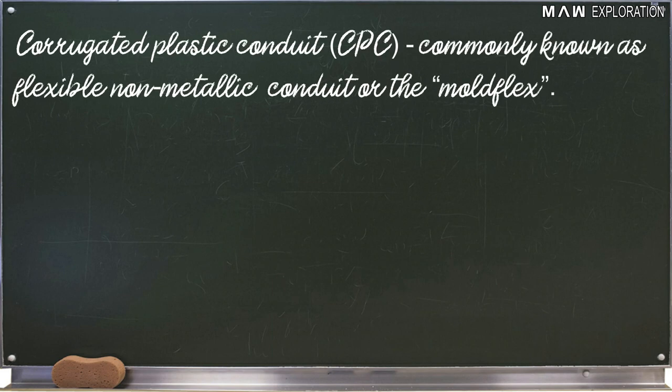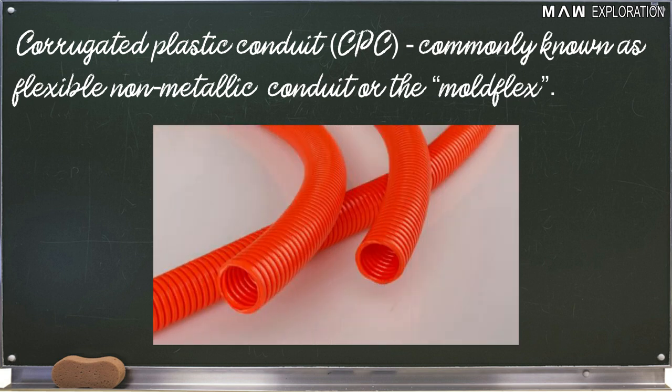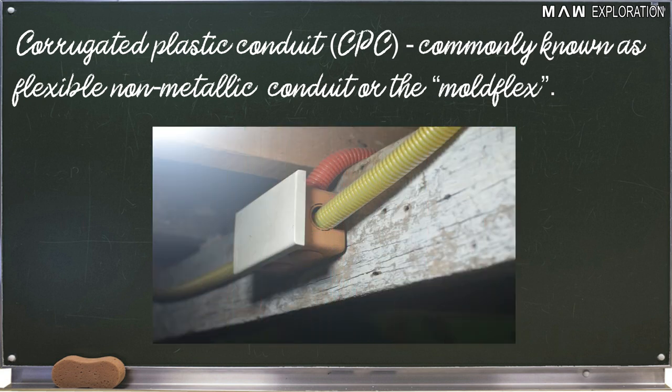Number nine, corrugated plastic conduit or CPC. It is commonly known as flexible non-metallic conduit or the mold flex. CPC is a plastic tube used to protect electric wiring. Most of our houses are using CPC. Take a look around your home, especially in the ceiling. You might notice that orange plastic tubing. That is the CPC.